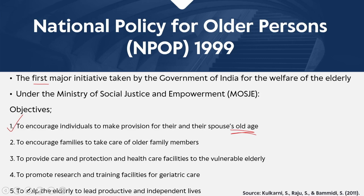The second objective of NPOP 1999 is to encourage families to take care of older family members, to provide care, protection, and healthcare facilities to the vulnerable elderly. It also aims to promote research and training facilities for geriatric care — geriatric care being with respect to old age — and to help the elderly lead a productive and independent life. There is also an objective to support voluntary and non-government organizations to supplement the care provided by families, acting as a support mechanism.